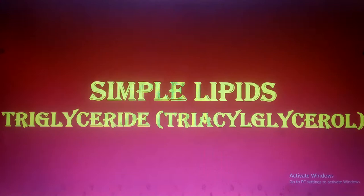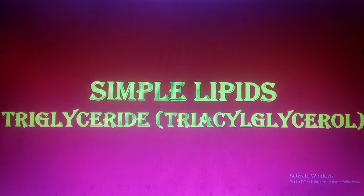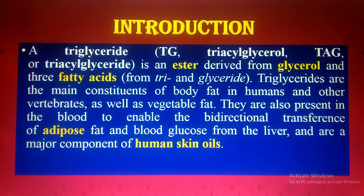First I am going to discuss in detail about the simple type of lipids, which are produced by the reaction known as esterification of fatty acids and glycerol. They are called triglycerides or triacylglycerol. The reason they are called triglycerides is that they are made up of three fatty acids with one glycerol — glycerol is an alcohol. Triglycerides are the main constituents of body fats in humans and other vertebrates, as well as vegetable fats. They are also present in the blood to enable transfer of adipose fats and blood glucose from the liver, and are a major component of human skin oil.